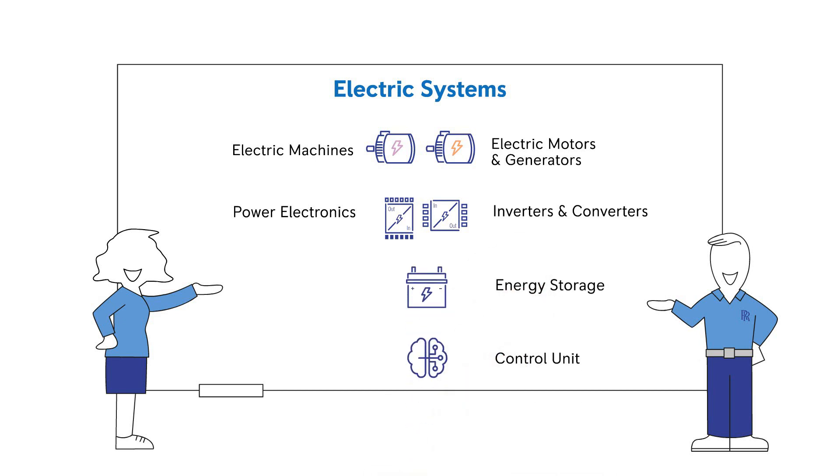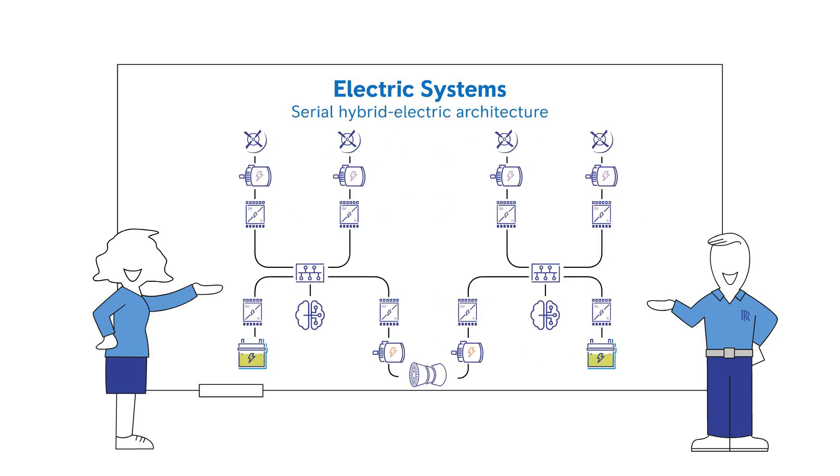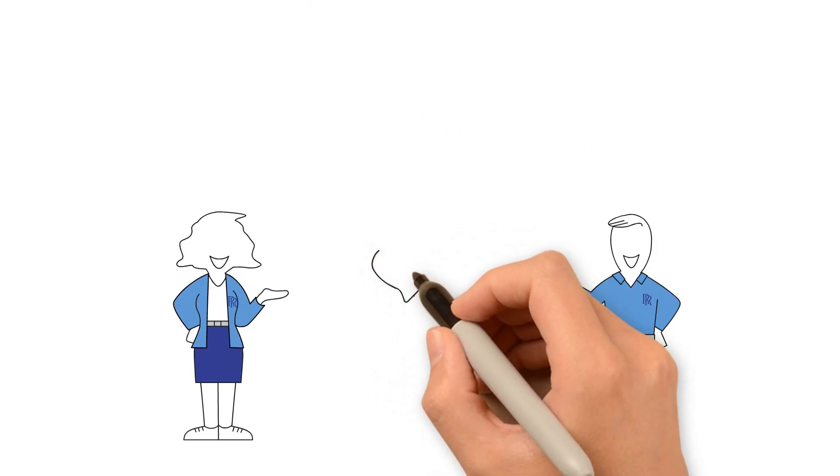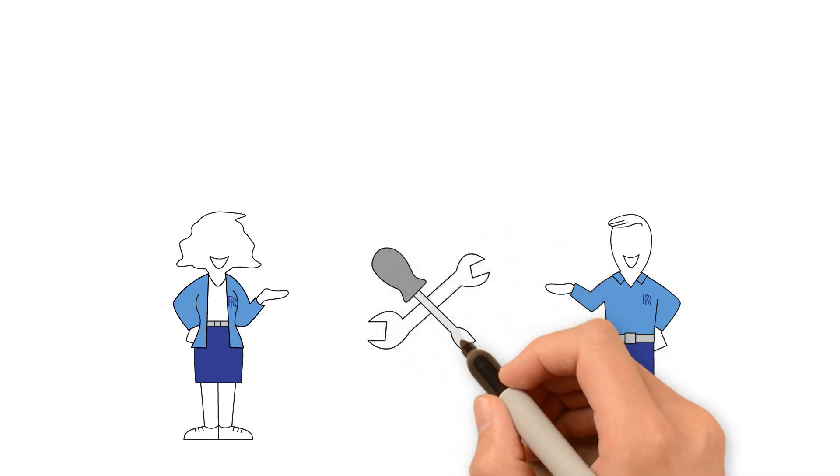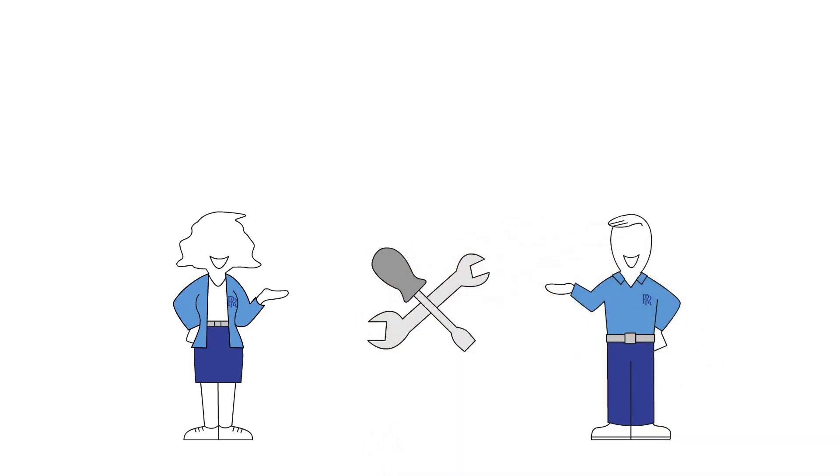Control units define component performance and response, and the system layer connects all the components together efficiently and effectively with the required resilience. At Rolls-Royce Electrical, we have organized our expertise along the technology capabilities needed to develop each of these bricks.